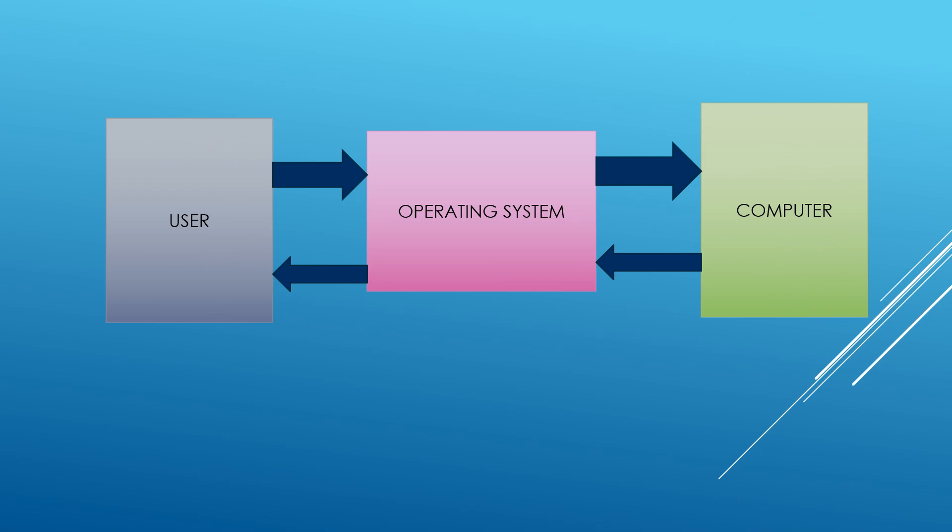Now let's understand what is the meaning or the work of an operating system being an interface. The user gives commands to the computer, but the computer cannot understand our language. So the user gives information, the operating system works on that instruction or command, converts it into computer language, and tells the computer what the user is asking to do. Then the computer does the work, and the result is again converted into our language by the operating system so that we can understand what the computer is trying to say. In this way the operating system acts as a mediator or interface between the user and the computer.